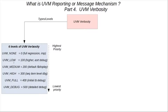Next up is UVM Low. This has a value or level of 100 and it's used to print debug messages for a higher block level or assertion debug messages. These are fairly important messages that an application engineer has determined are significant. They can help in analyzing a quick sanity check for a passing test or to make sure certain testbench functionality actually occurred in a given test.